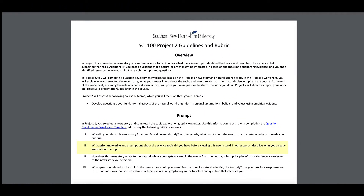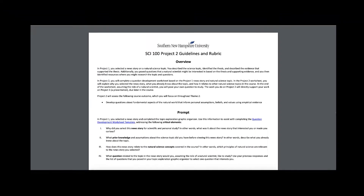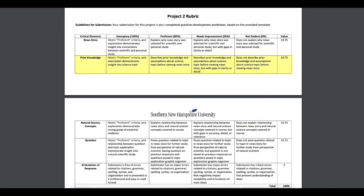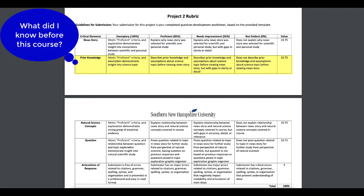The second prompt and critical element for Project 2 are associated with your description of the prior knowledge and assumptions you had about your science topic prior to choosing your news story back in Week 1. You can use your responses from the 3-3 short answer to build on the statements to include here. To achieve the exemplary level of achievement for this critical element, a demonstration of your insight into the science topic is required. We can compare our current level of knowledge after 4 weeks with this topic to our knowledge base back in Week 1.